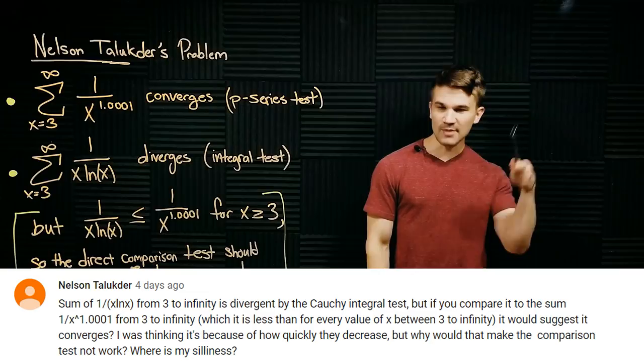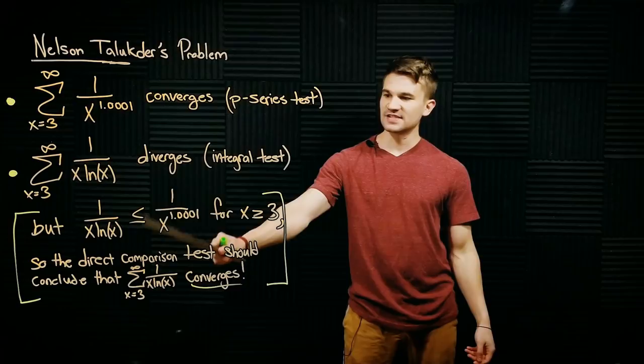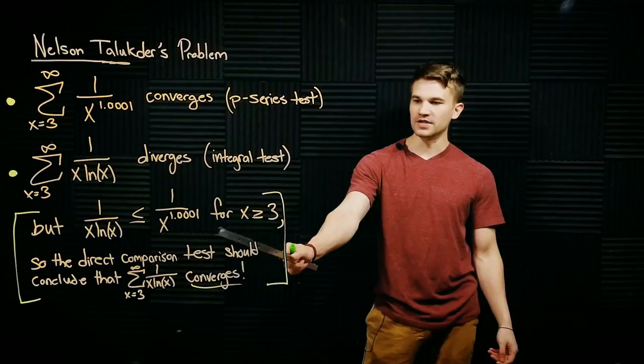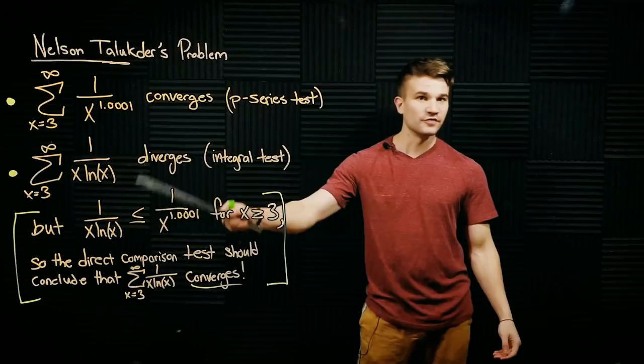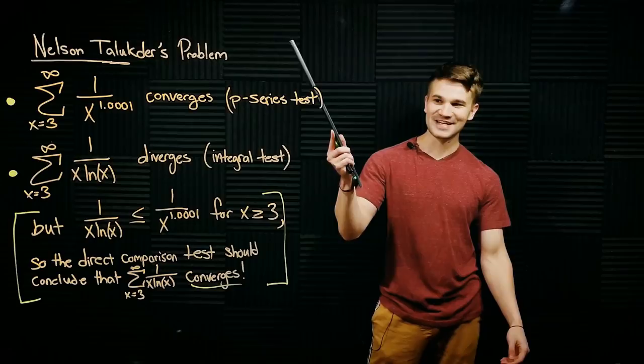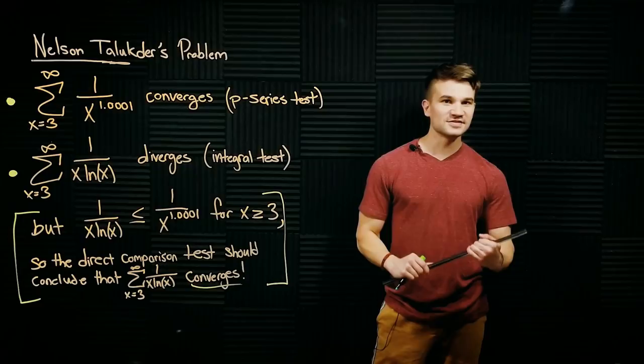But we have a problem because the value of one over x times the natural log of x is less than or equal to one over x to the power of 1.0001 for all x greater than or equal to three. So by the direct comparison test of these two series, we should get that this series converges by the direct comparison test. But we can conclude that it diverges through the integral test. So what's going wrong here?